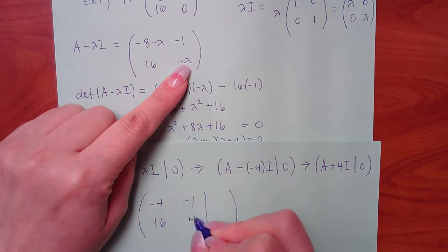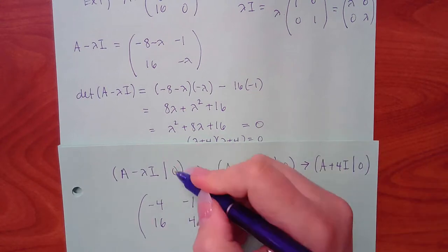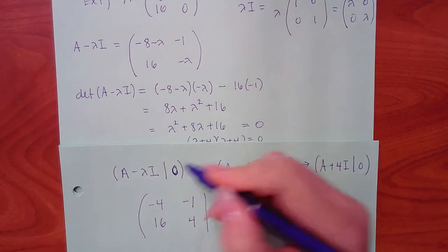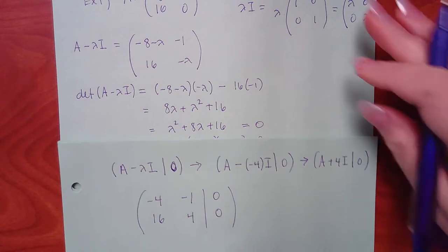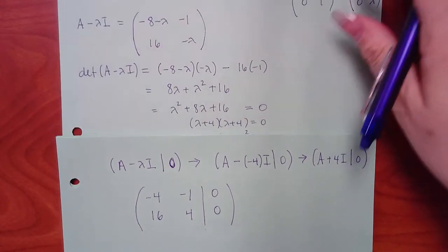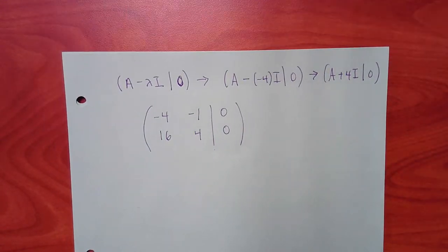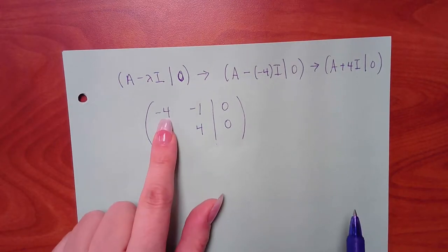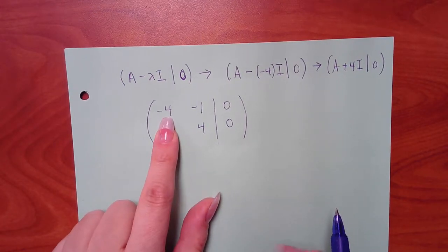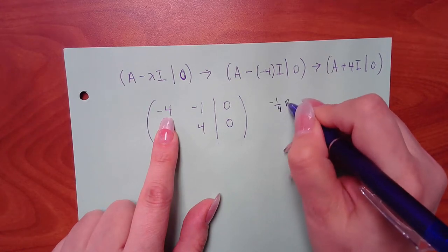Remember that zero on the right-hand side is a matrix zero, so we put two zeros because we have two rows. Then we solve using row operations. Multiply row 1 by negative one-fourth to make the leading entry a one.